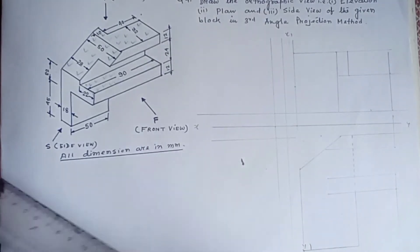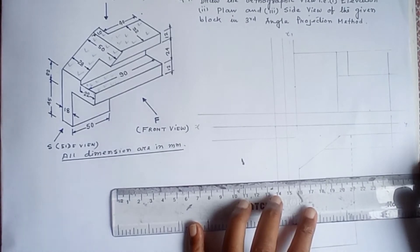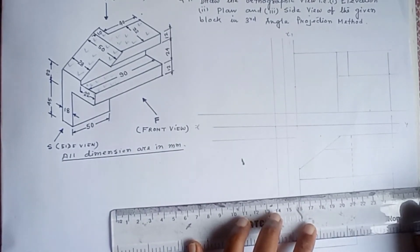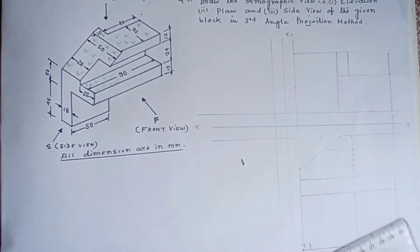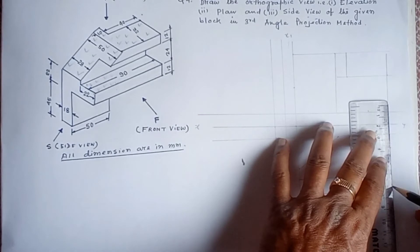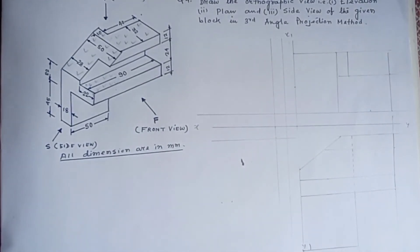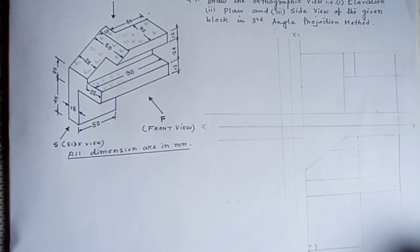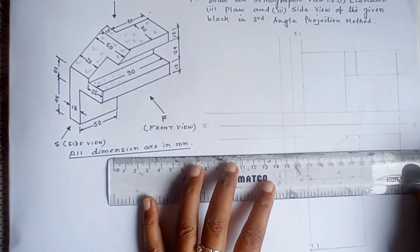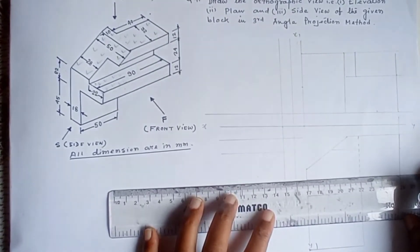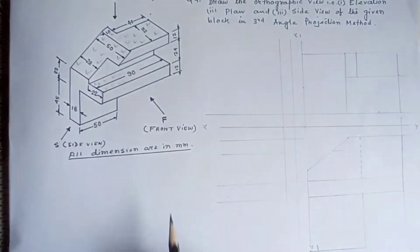The A line is completed. This is the last point — this is the A line. The A line is formed. This is the front view. This is the side view. This is the projection line, so the side view is easy to draw. The side view is 50.